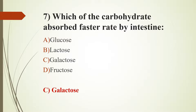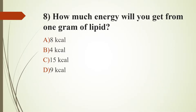Eighth question: How much energy will you get from 1 gram of lipid? Option A, 8 kilocalories. Option B, 4 kilocalories. Option C, 15 kilocalories. Option D, 9 kilocalories. The answer is Option D, 9 kilocalories. From 1 gram of glucose, you get 4 kilocalories.